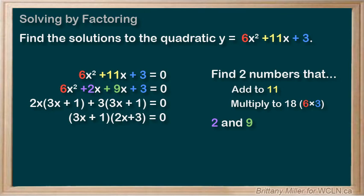For this to be true, either 3x plus 1 must equal 0, or 2x plus 3 must equal 0. We solve both of these separately and get x equals negative 1 third and x equals negative 3 halves.